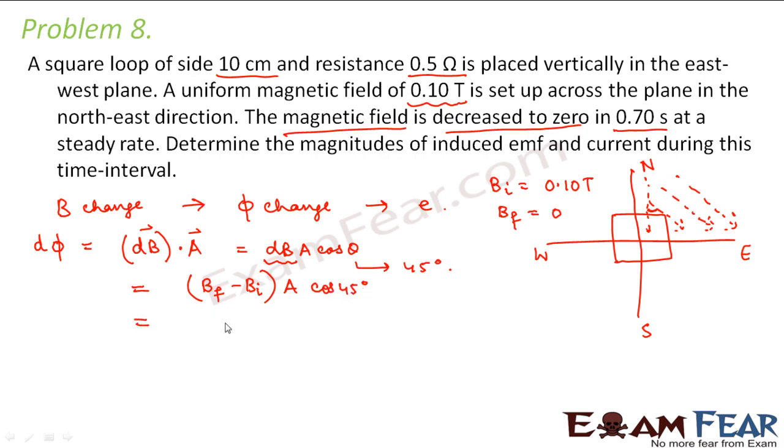So final magnetic field is 0 minus 0.10 into area is, for a square the area would be side square that is 10 into 10 into 10 to the power minus 4 meter square into cos 45 degree is 1 by root 2.